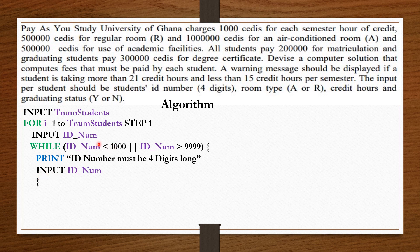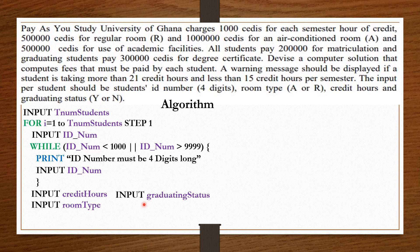Outside our while loop, we ask the student to enter the room type — input room type. We also ask the student to enter the number of credit hours — input number of credit hours. And lastly, we ask the student to indicate the graduating status — input graduating status.